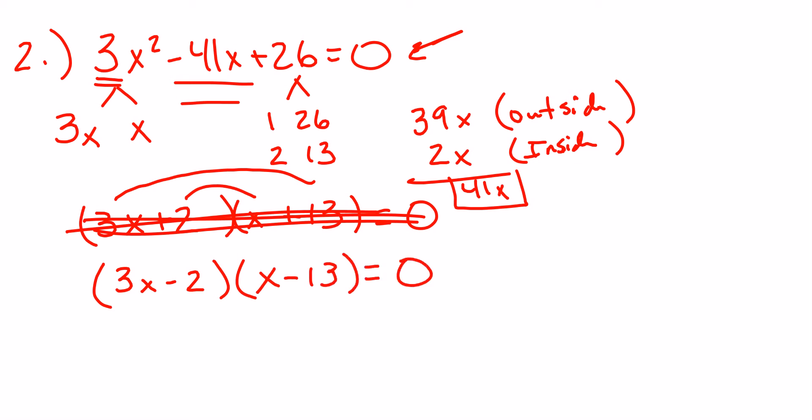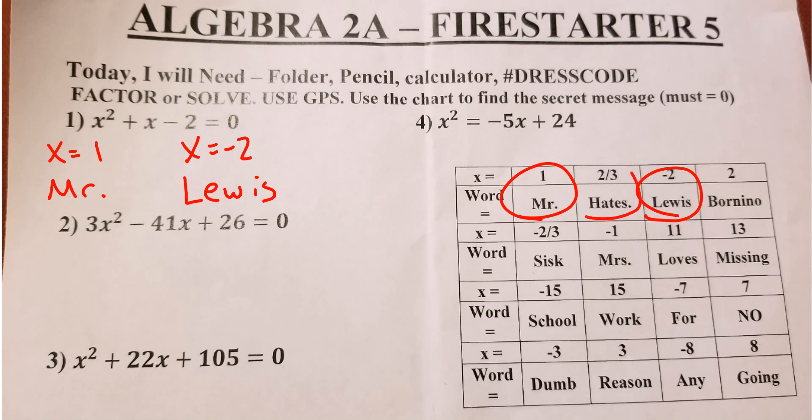Now remember, you're going to solve it. So you're going to say 3x - 2 = 0, or it could be x - 13 = 0. I'm going to add 2 to get 3x = 2. So I add 2 to both sides. I'm getting x by itself. Divide by 3. x = 2/3. This one's really easy. Just add 13 to both sides. x = 13. So I'm looking for 2/3 and 13. So I found 2/3 is hates, and 13 is missing.